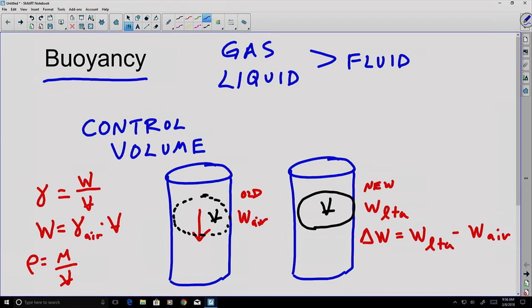If I then recognize this relationship here between weight, specific weight, and volume, I can rewrite that as the volume times the specific weight of the lighter than air material, minus the specific weight of the air. Plugging that into both places and taking the volume out of both. Notice that volume is not the volume of the entire column, but simply the volume of the piece that's being replaced.